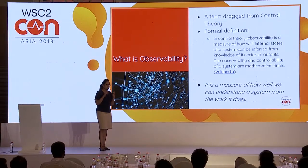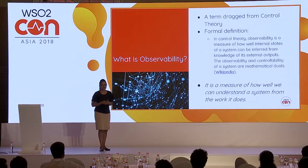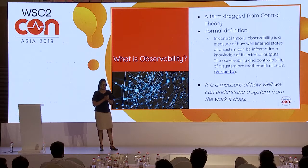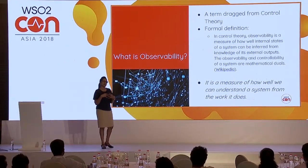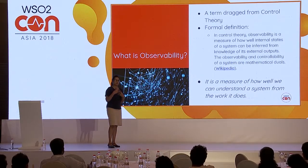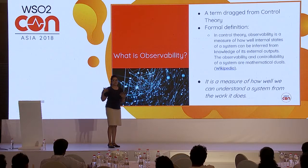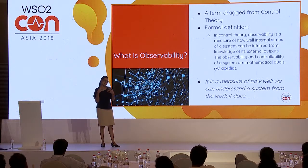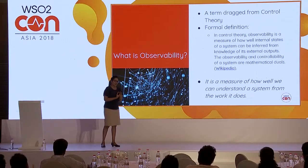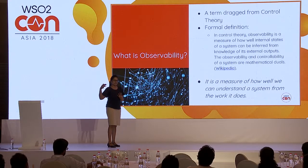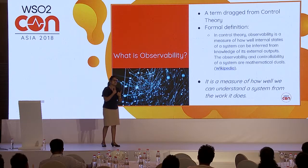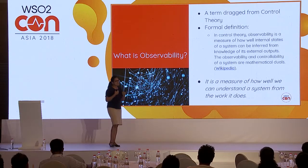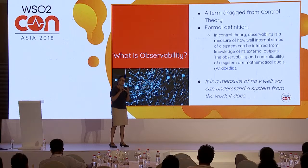Let's try to put it in simple terms. Think of the medical world — think of the human body as a system. In order to understand the health of the human body, we generally take blood tests, X-rays, and scanning, and we try to understand its health. Those tests are basically external outputs, and with them we are trying to understand the internal state of the human body. The transparency of our human body is derived from these tests. So this is the observability of the human body.